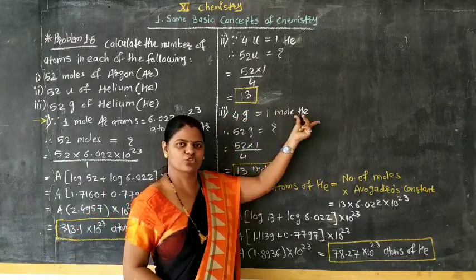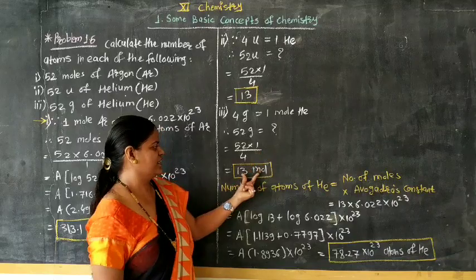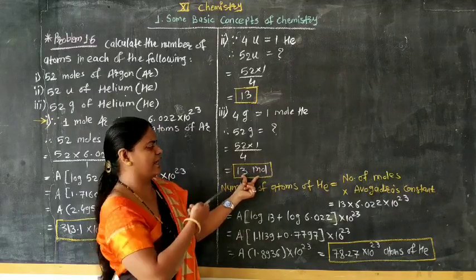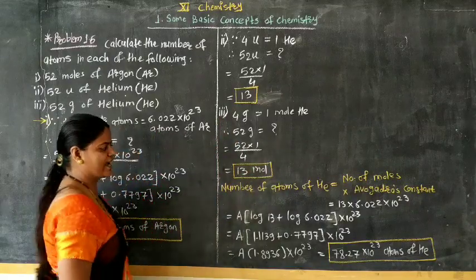4 gram, gram atomic mass corresponds to 1 mole. Then 52 gram corresponds to how many moles? Yes, it is equal to 13 moles. Same calculation. Now we have 13 moles. We have to find out the relation.